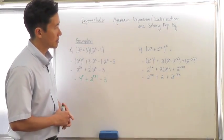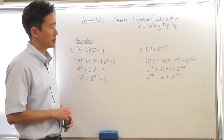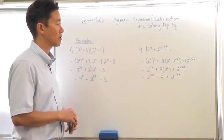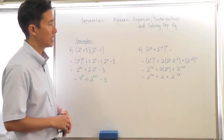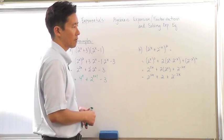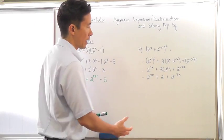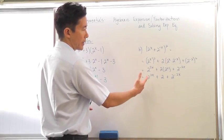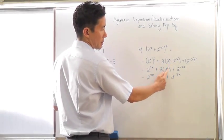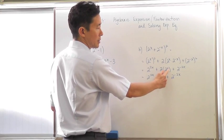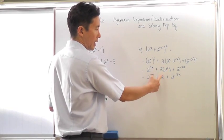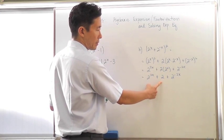Let's take a look at 2 to the x plus 2 to the negative x, quantity squared. Doing the same thing in the sense that we're FOILing. Notice that the middle term comes out to 2 to the 0, which of course is 1, and we come out with a value of 2.